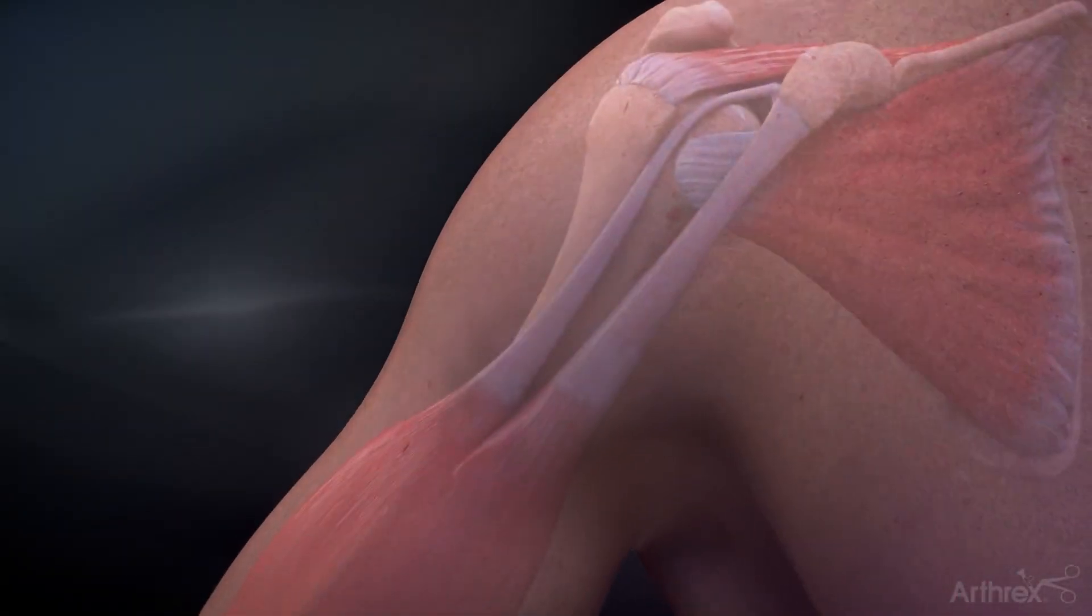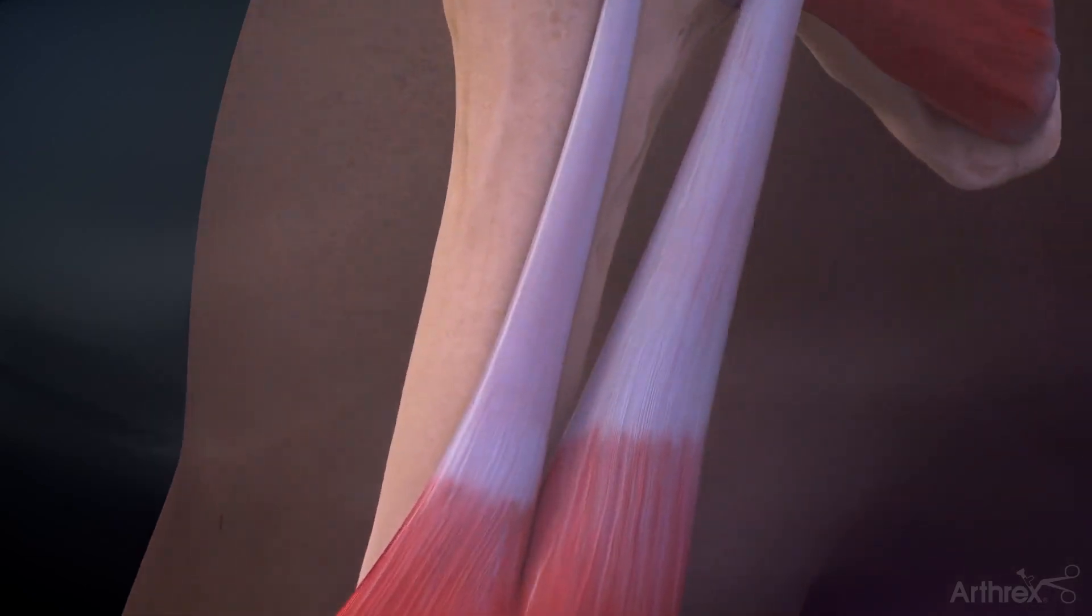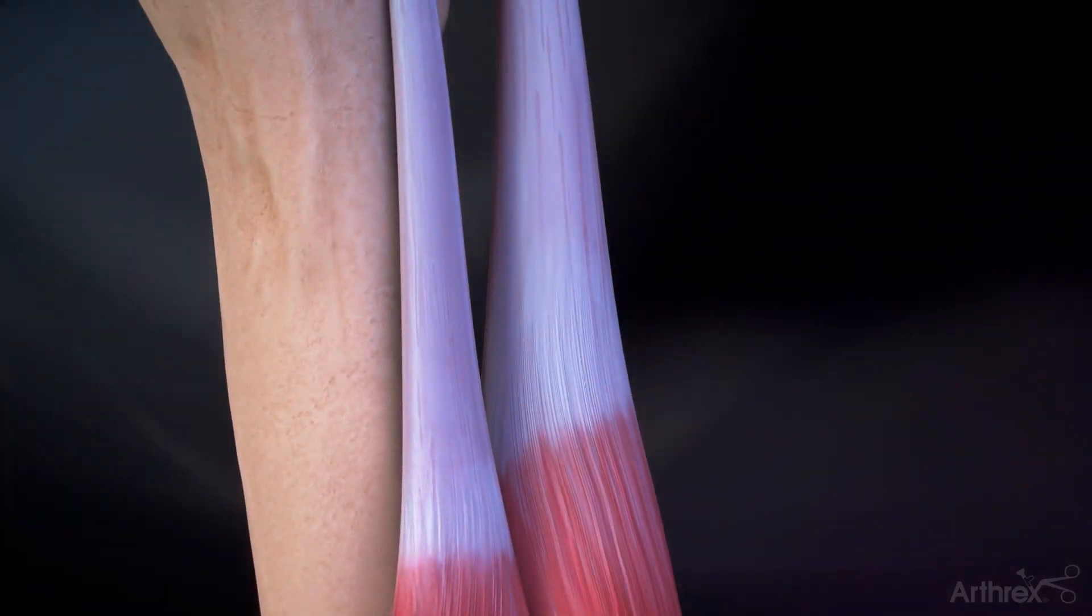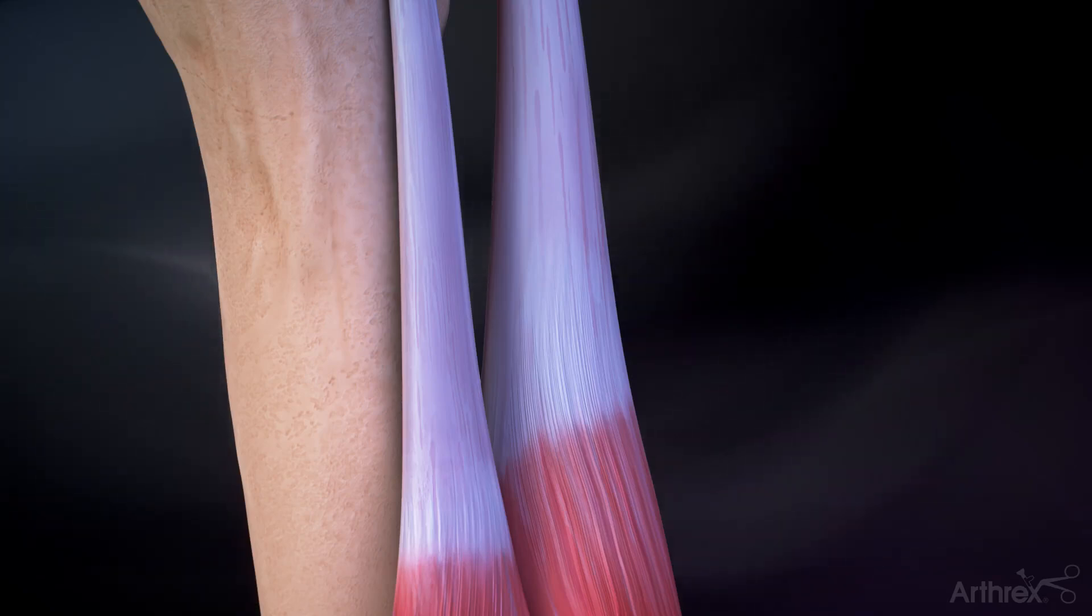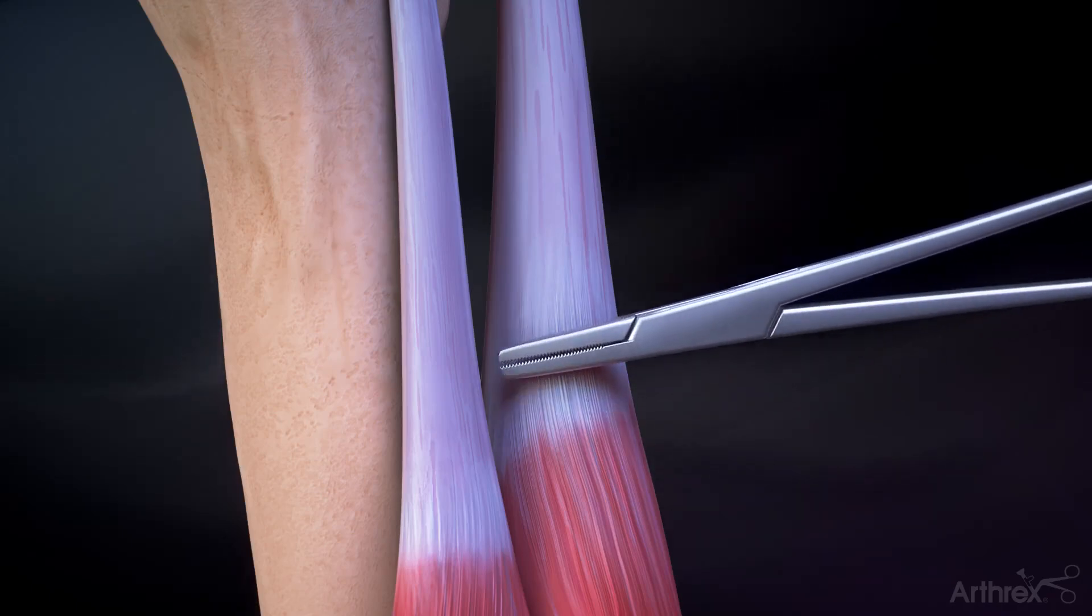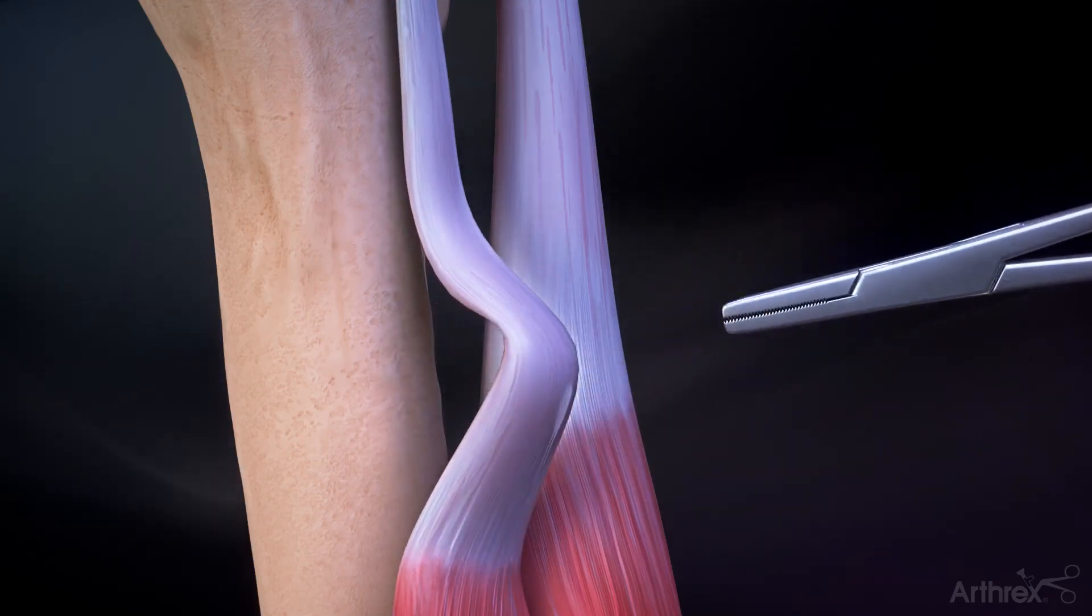Make a 2 to 3 centimeter incision in the axilla at the inferior border of the pectoralis major. Bluntly dissect to identify the pectoralis major and the long head of the biceps tendon. Retrieve the previously tenotomized biceps tendon through the incision.